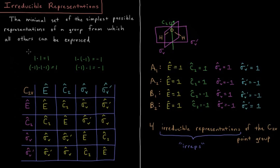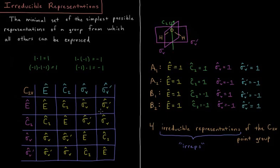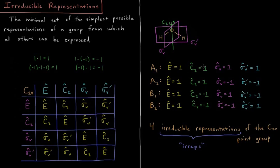First, recall that 1×1=1, 1×(−1)=−1, and (−1)×1=−1. One way to represent these four operators consistently with the table is to define E=1, C2=1, σv=1, and σv'=1. For example, E×C2 = 1×1 = 1, which equals C2; and σv×σv' = 1×1 = 1, which equals C2 — also 1. This is consistent with the multiplication table, and this representation is called the A1 representation of the C2v point group.